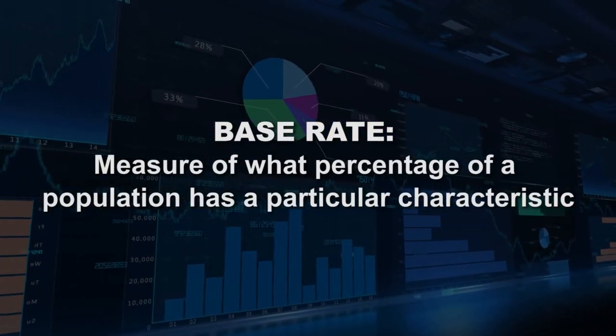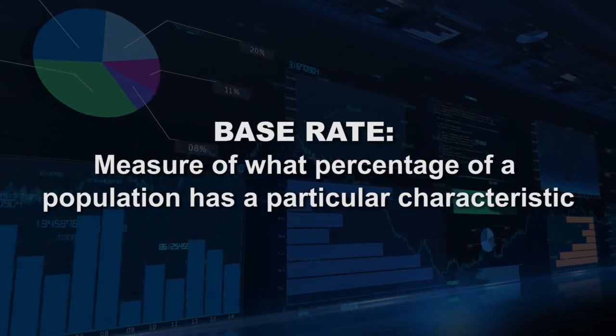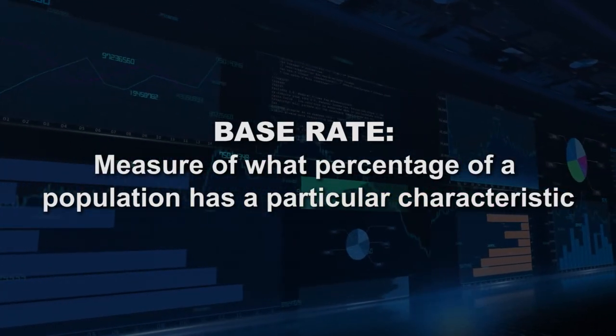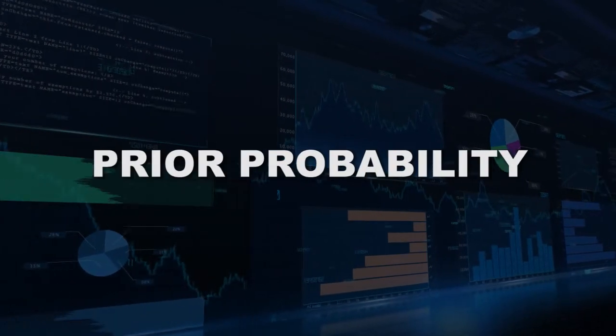Base rates are a statistical measure of what percentage of a population has a particular characteristic. This statistic is then used as the base or prior probability upon which to compare other measurements. For example, let's say we are told that 2,000 people have improved or cured their back pain using a type of treatment. This might sound impressive on first glance, but then we find out that 200,000 people tried the treatment, which means that 198,000, or 99%, did not improve while using the treatment, and only 1% did.